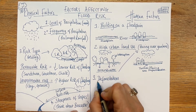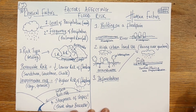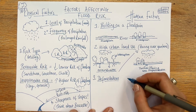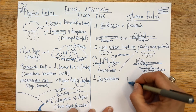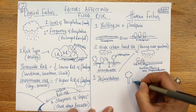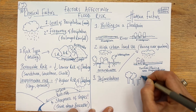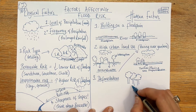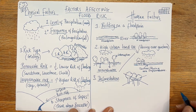Number three is deforestation. You know this from the Living World unit looking at the rainforest. We don't often think about it in the UK, but a lot of it has already happened and is still occurring. Deforestation is where you cut down trees.